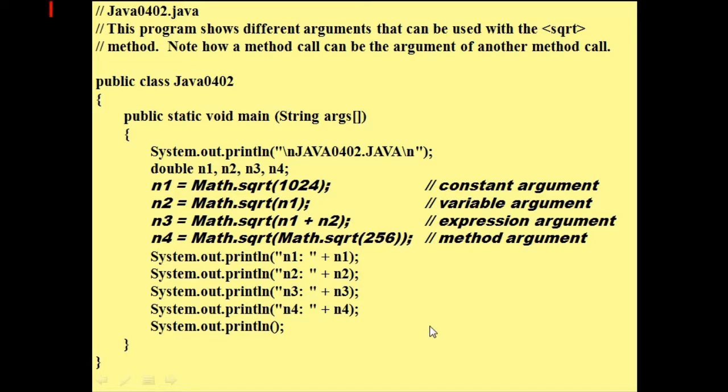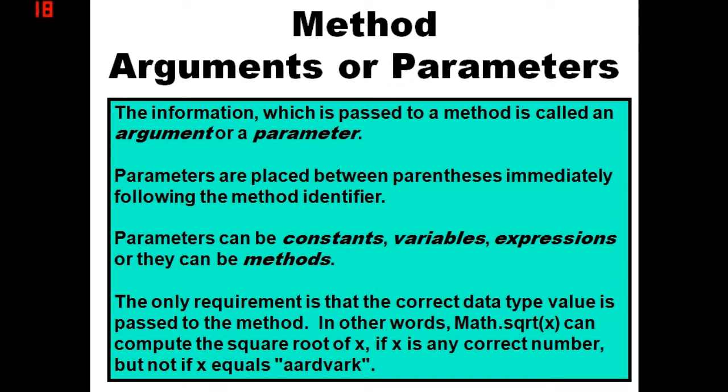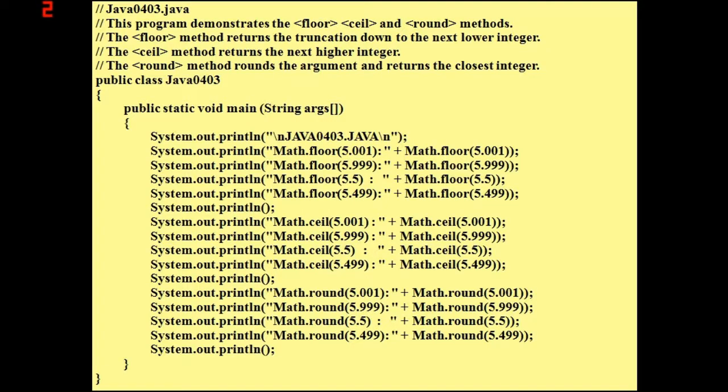The only requirement is that the correct data type value is passed to the method. In other words, Math.sqrt can compute the square root of x if it is any correct number, but if x equals aardvark then it won't work. Here we have floor and ceil which we used in the last tutorial.